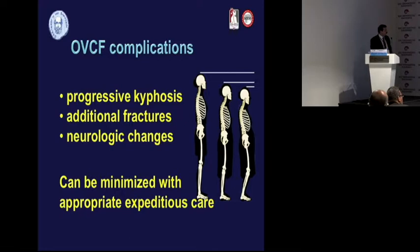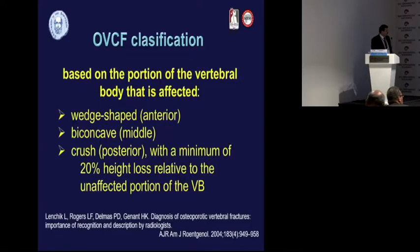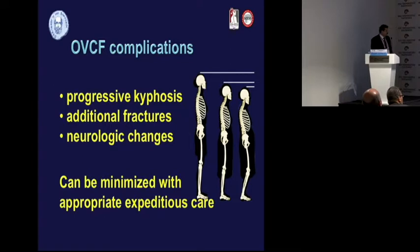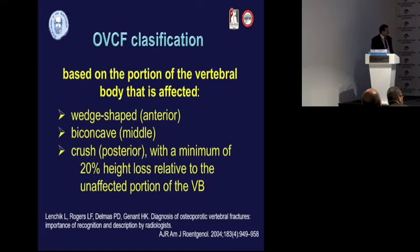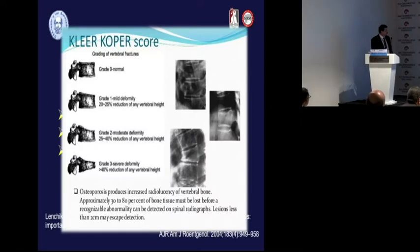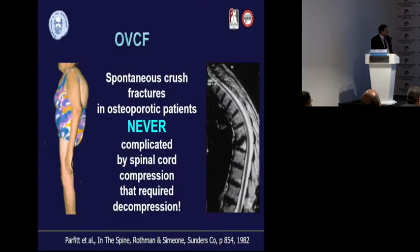We then see loss of height, postural body changes, and finally progressive kyphosis, additional fractures, and neurological changes. All this can be minimized with prompt, expeditious care, which is now based on the portion of the vertebral body affected: the anterior, the concave middle position, and the CRASS score that we can use.